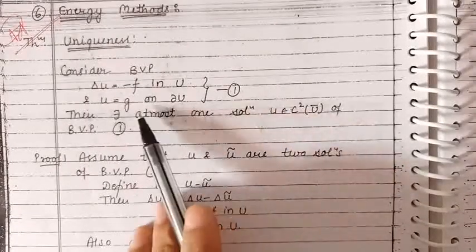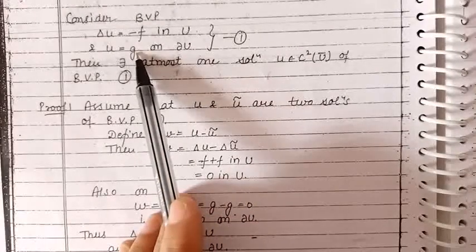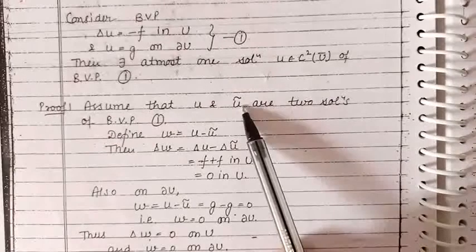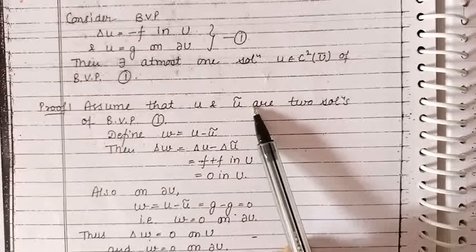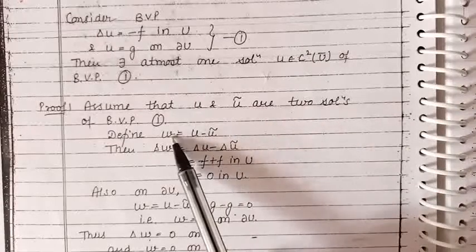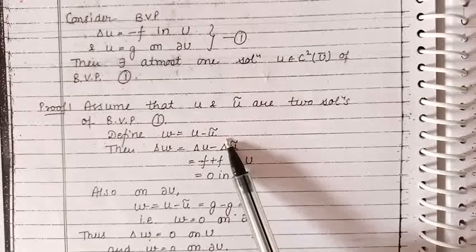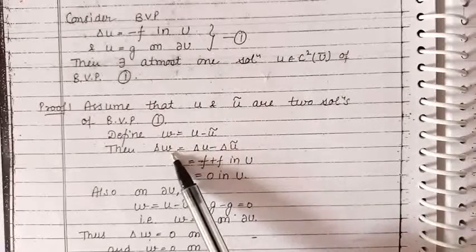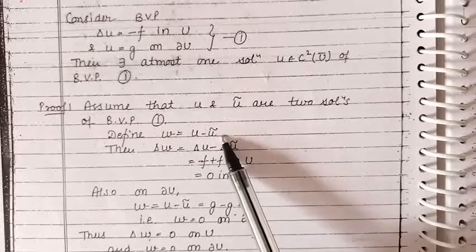Now to prove the uniqueness of solution, let us consider two solutions of this boundary value problem. One of the solutions we have denoted by u and the other we have denoted by u bar. Now let us define a function w by taking the difference, so w is equal to u minus u bar. Now let us find the Laplacian of the function w, so that will become Laplacian of u minus Laplacian of u bar.